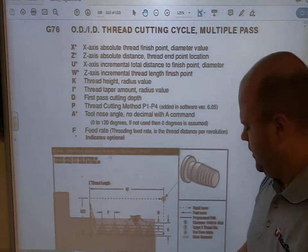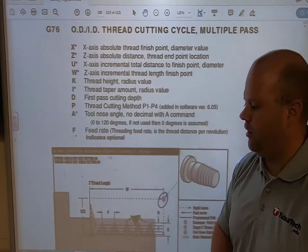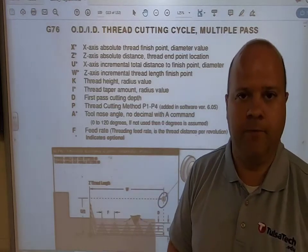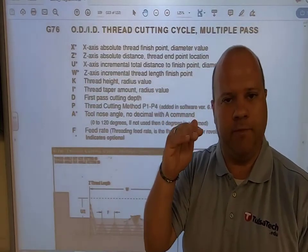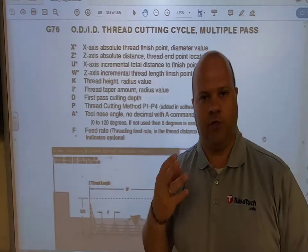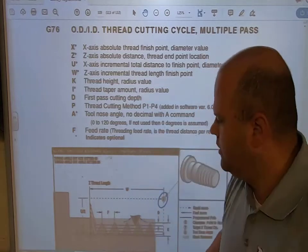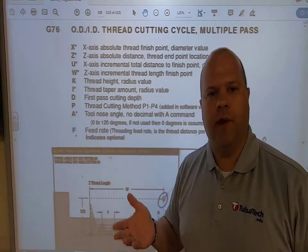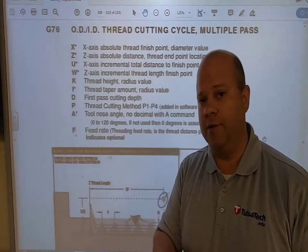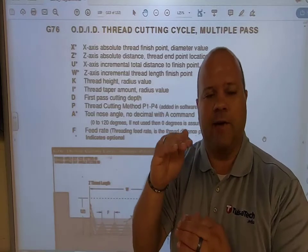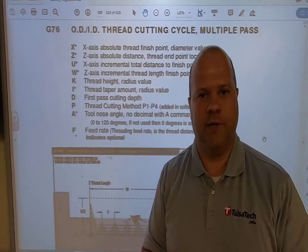The first thing I want to focus on is this letter C right here. C represents our clearance point, so whenever I'm coming to my threads I want to be above the diameter that I cut. For example, we'll be using a three-quarter 10 threads-per-inch thread. When I come up to it, my clearance point will be at X 800 thousandths — that is 50 thousandths above where my threads start.